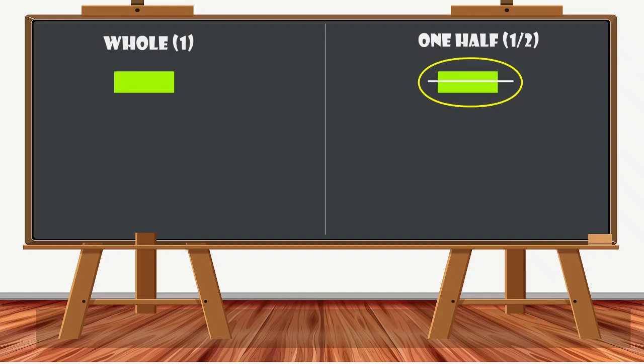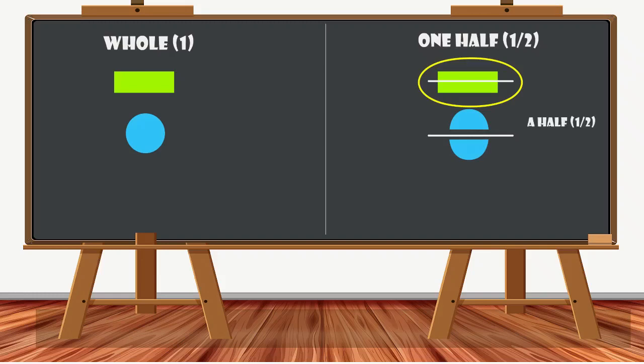Here's another shape — a circle. If we divide it into two parts, we get two halves, and this is what it looks like. Each part is also called a half, or one half. Let's play a game — look at the two images and circle the shape that has one half of a whole.